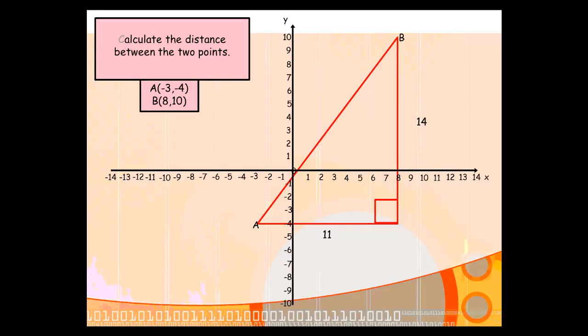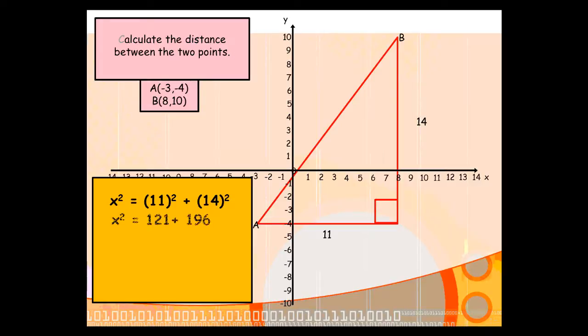And we can then go about using Pythagoras' theorem to work out the length of our hypotenuse. Now, if we call the hypotenuse x, then x-squared is going to be 11-squared plus 14-squared. Work that out, you get 317, and the square root of 317 will give us x, which is, to one decimal place, 17.8.